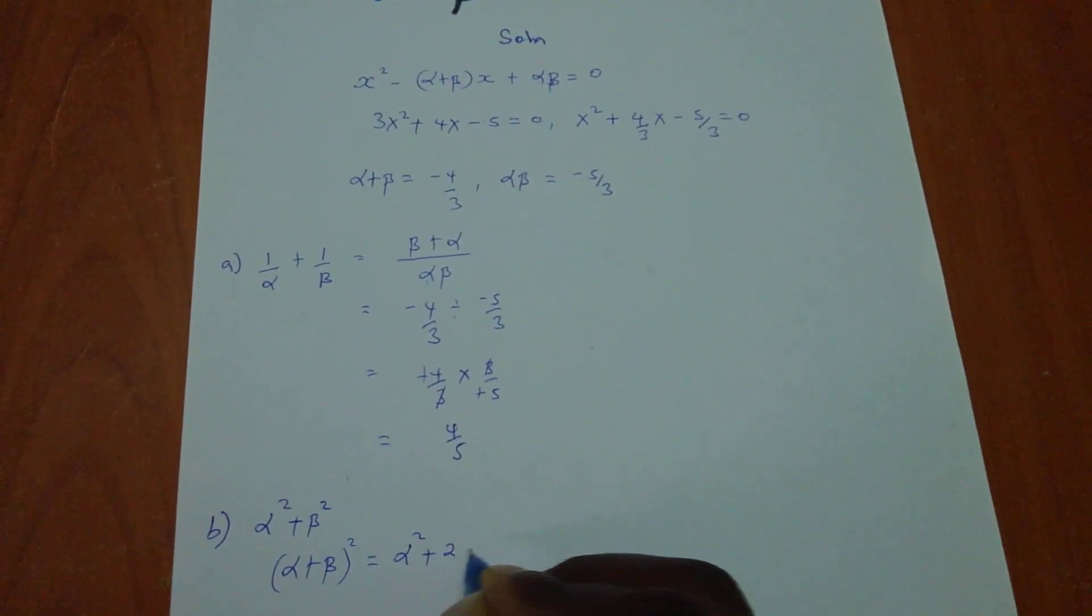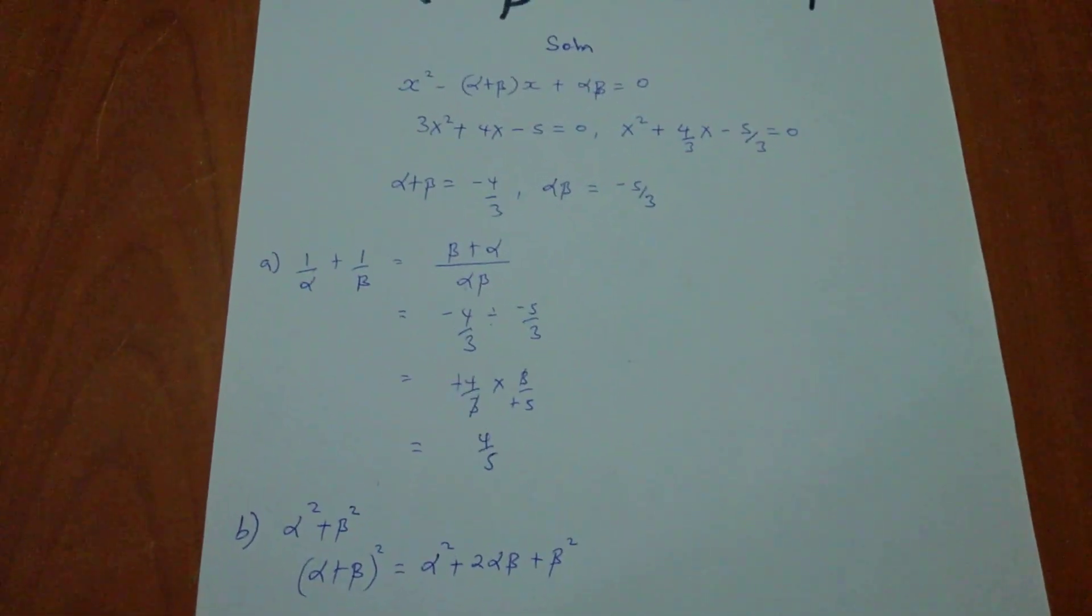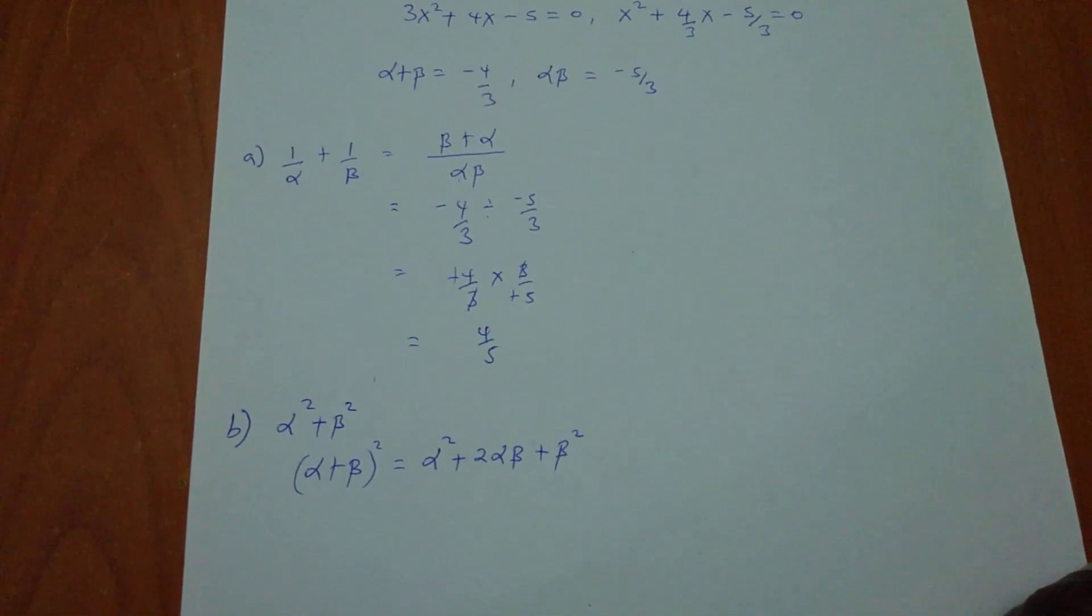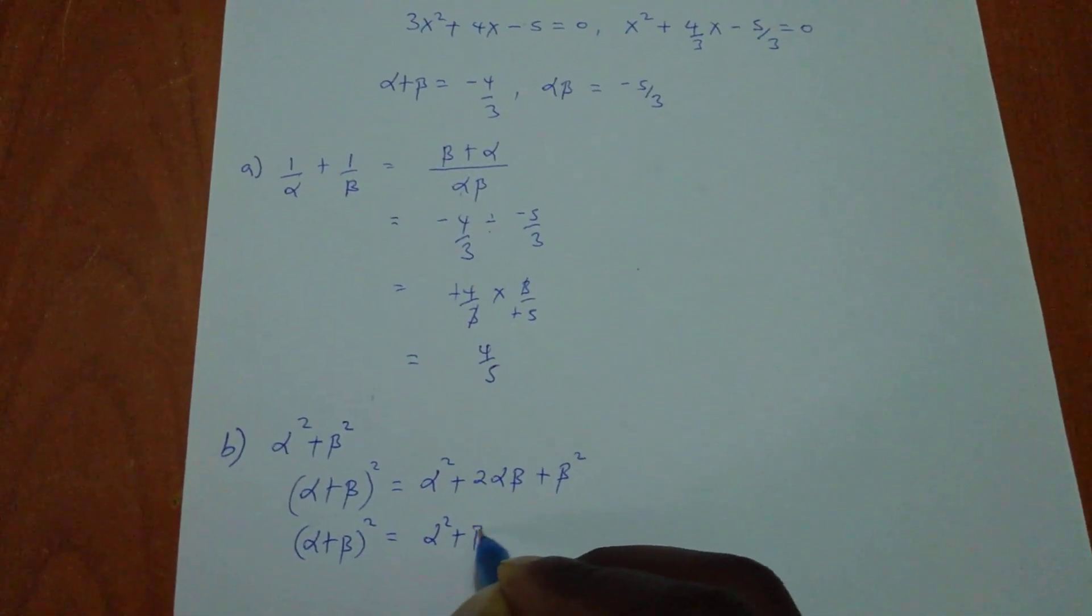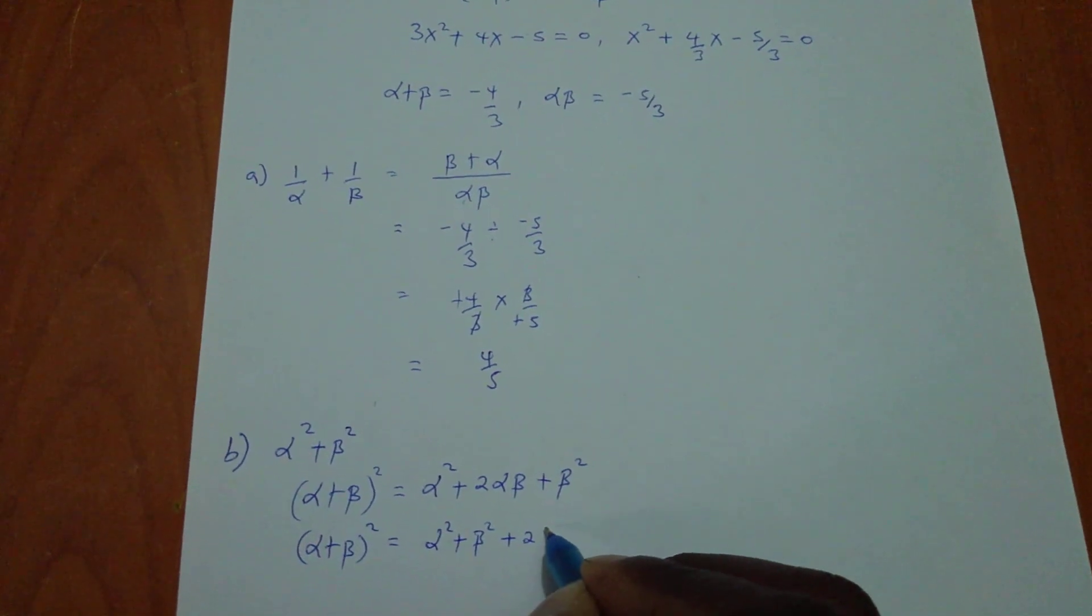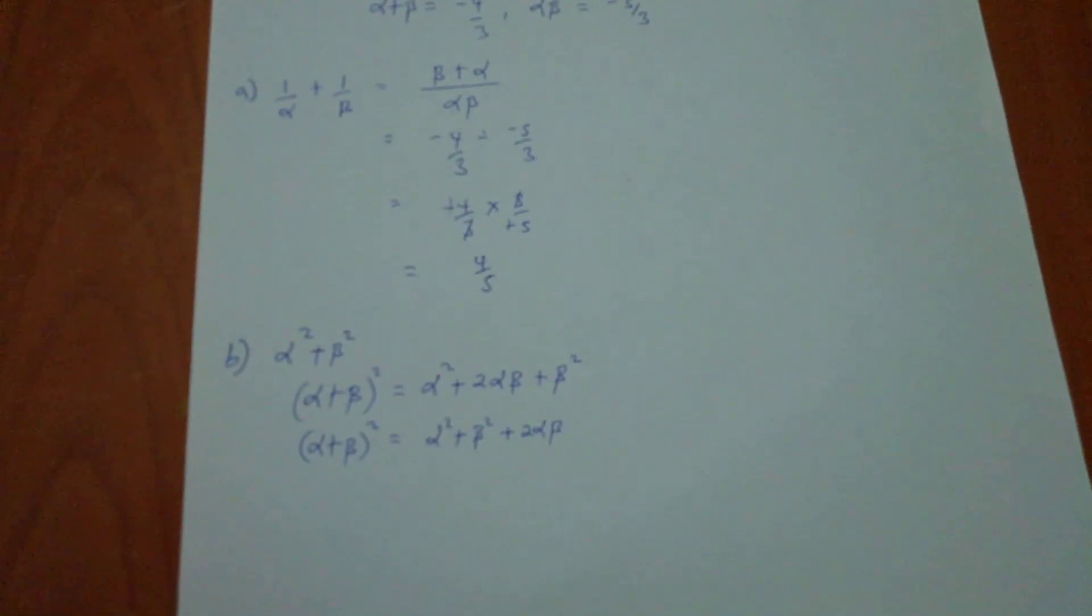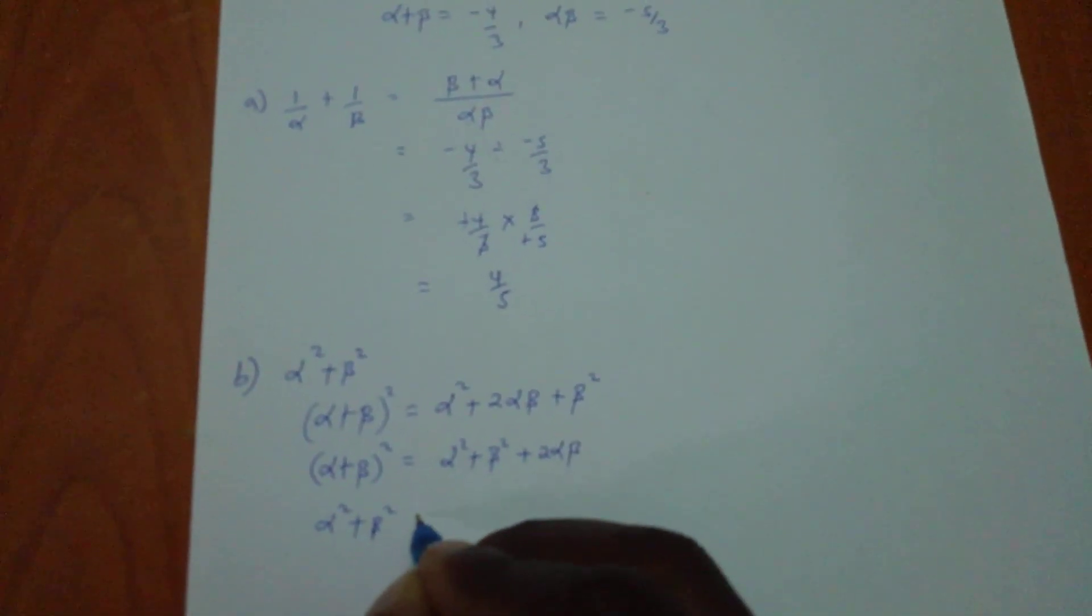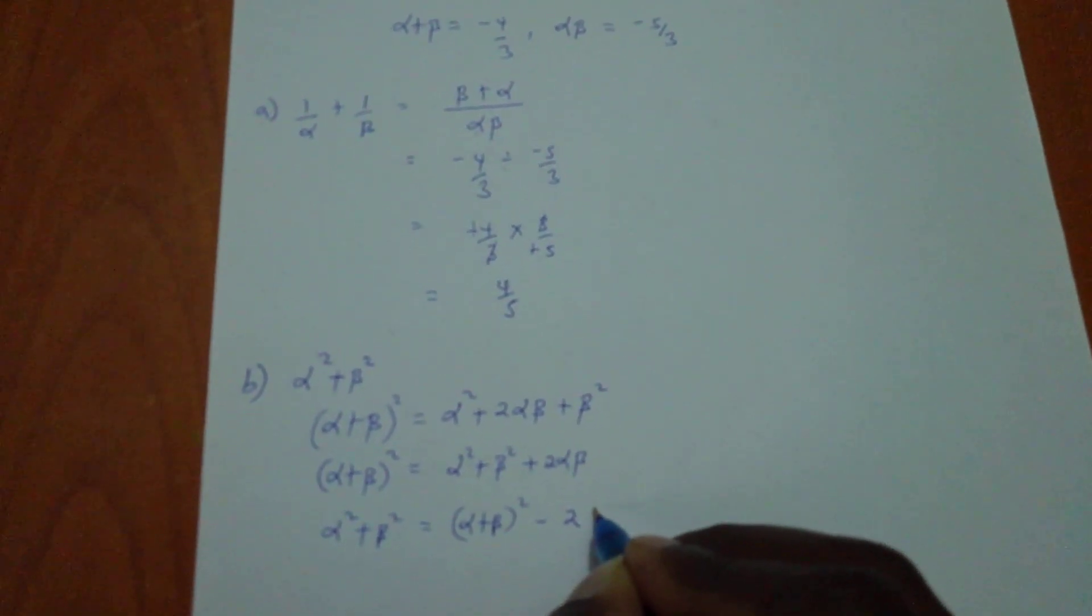Here, I will have α² + 2αβ + β². Now, to rearrange this, I will have α² + β² + 2αβ. If I rearrange very well, it will be α² + β², which I want, equals (α + β)² - 2αβ.